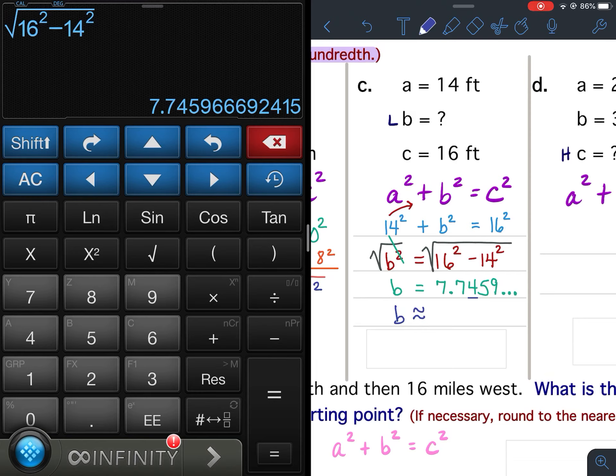Well, zero to four stays the same. Five to nine goes up one. So this would be 7.7. b is approximately 7.75. Final answer.